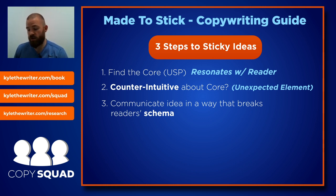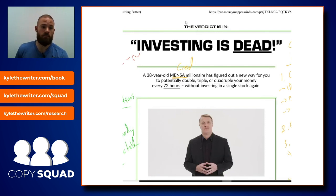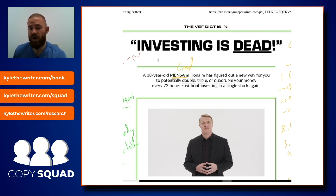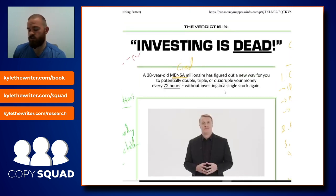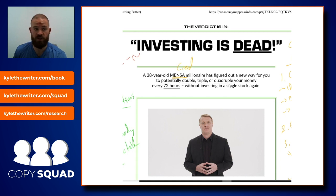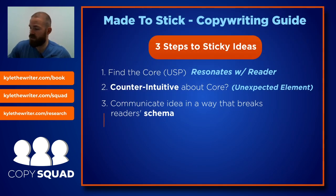If we go back to these examples — we're talking about Money Map Press, an investing newsletter — and the headline is 'investing is dead.' Why would investing be dead? A 38-year-old Mensa millionaire figured out a new way to potentially double your money every 72 hours without investing in a single stock. So we're probably trading some sort of option — calls, puts, leverage ETFs — something that isn't technically a stock. But in order to get you to that point, you have to break the reader's schema. And whenever you've broken a schema, you create a knowledge gap, because the reader's whole worldview doesn't make sense anymore.